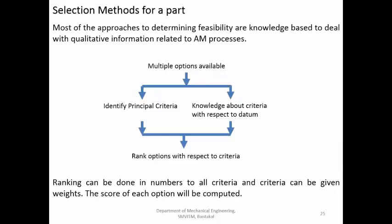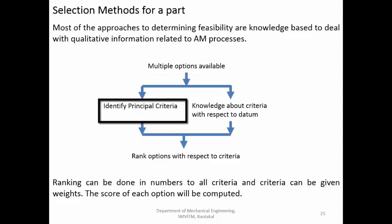Step by step, the selection process starts with multiple options. For example, to create a component made of ABS material, it can generally be made by FDM, selective laser sintering, or laminated object manufacturing. So there are three options — multiple options — available for that particular component. The next step is to identify the principal criteria.